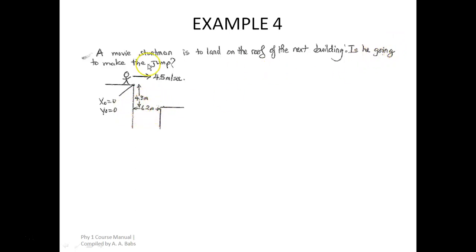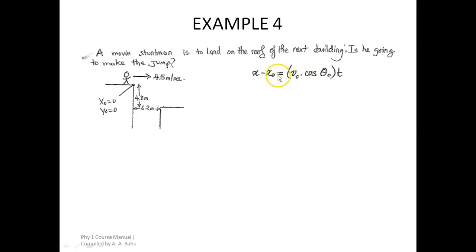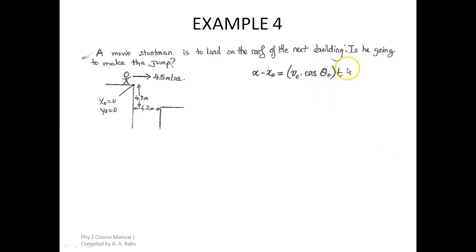The question is: is he going to make the jump given these parameters? Our x₀, the initial horizontal position, is 0. Our y₀, the initial vertical position, is also 0. Consider the horizontal equation for motion in two and three dimensions: x minus x₀ equals v₀ cos(θ₀) multiplied by t, where v₀ is the initial velocity, θ₀ is the initial angle made with the horizontal, and t is the time required to make the jump.